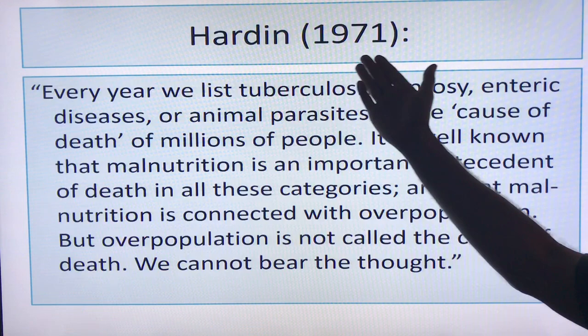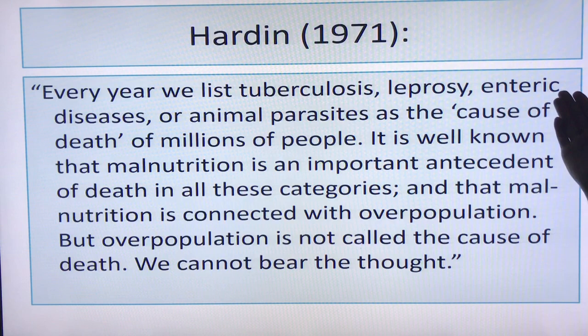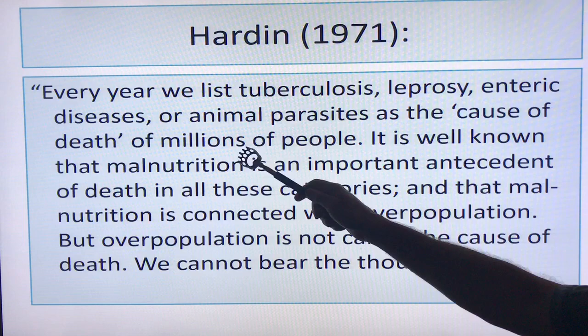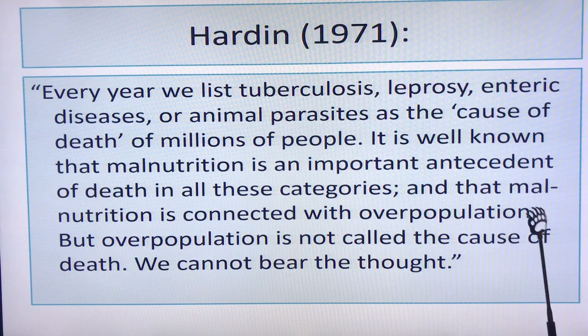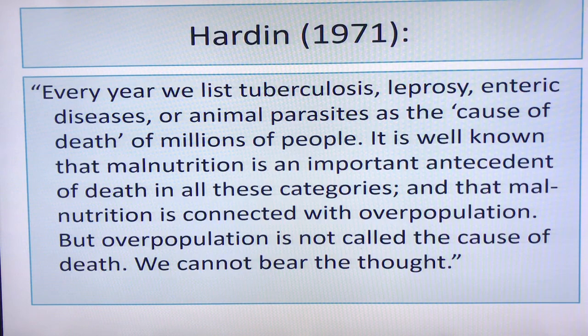According to Hardin, every year we list tuberculosis, leprosy, enteric diseases, or animal parasites as the cause of death of millions of people. It's well known that malnutrition is an important antecedent of death in all of these categories, and that malnutrition is connected with overpopulation. But overpopulation is not called the cause of death. We cannot bear the thought of evoking overpopulation as the cause of any death.